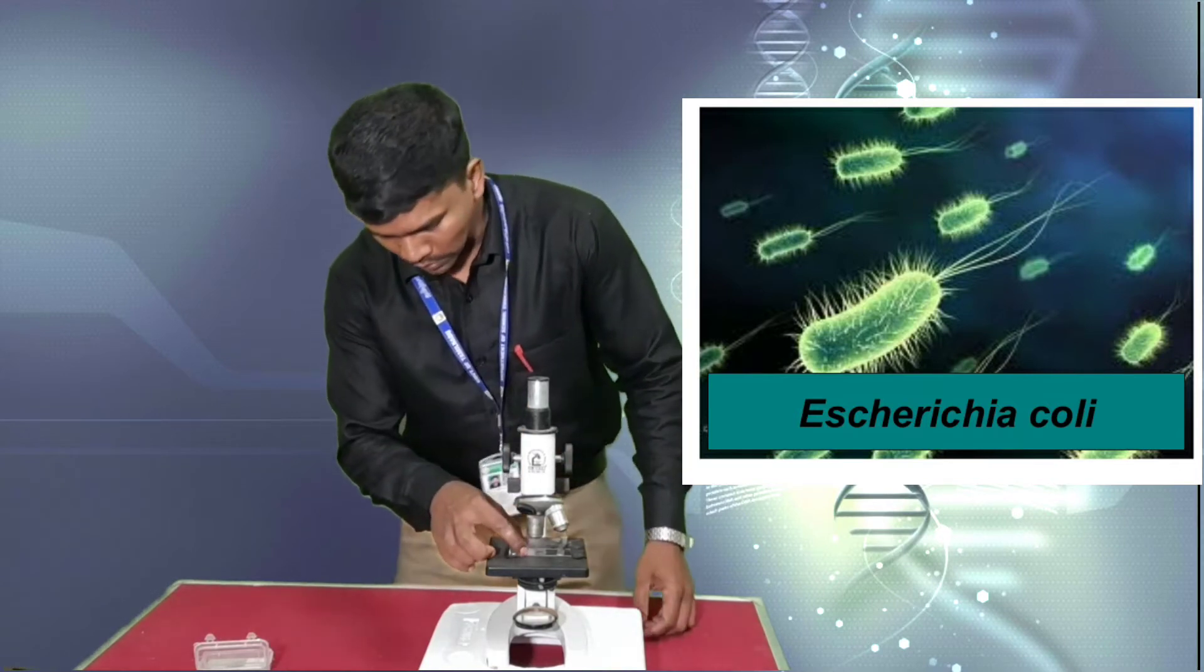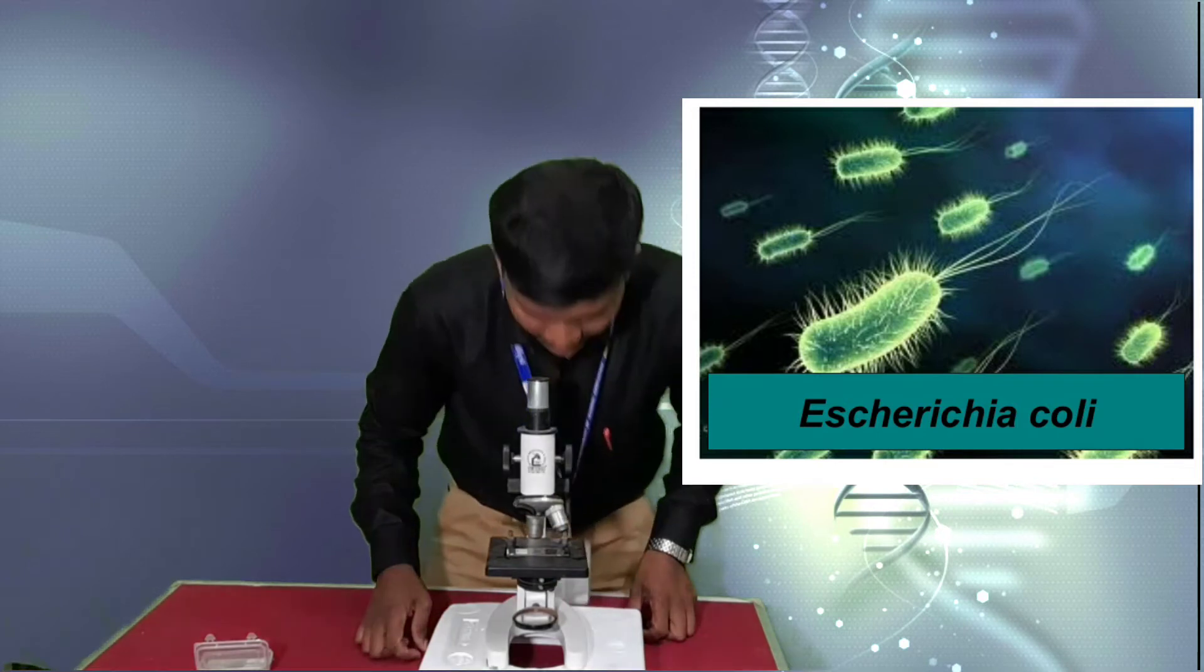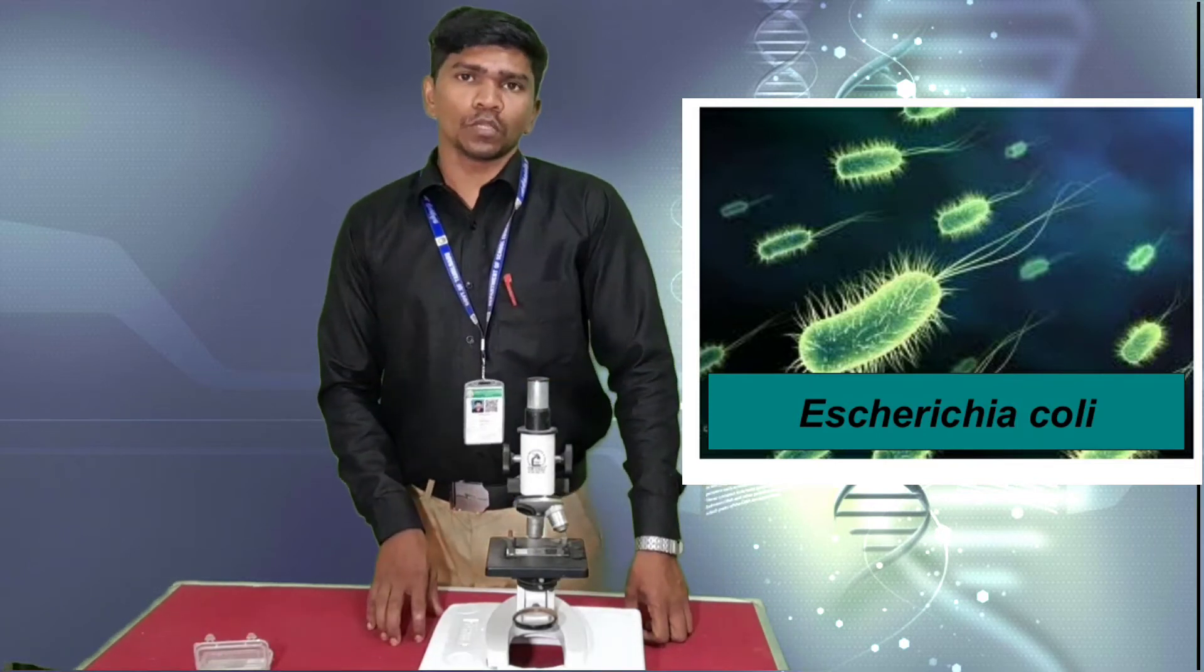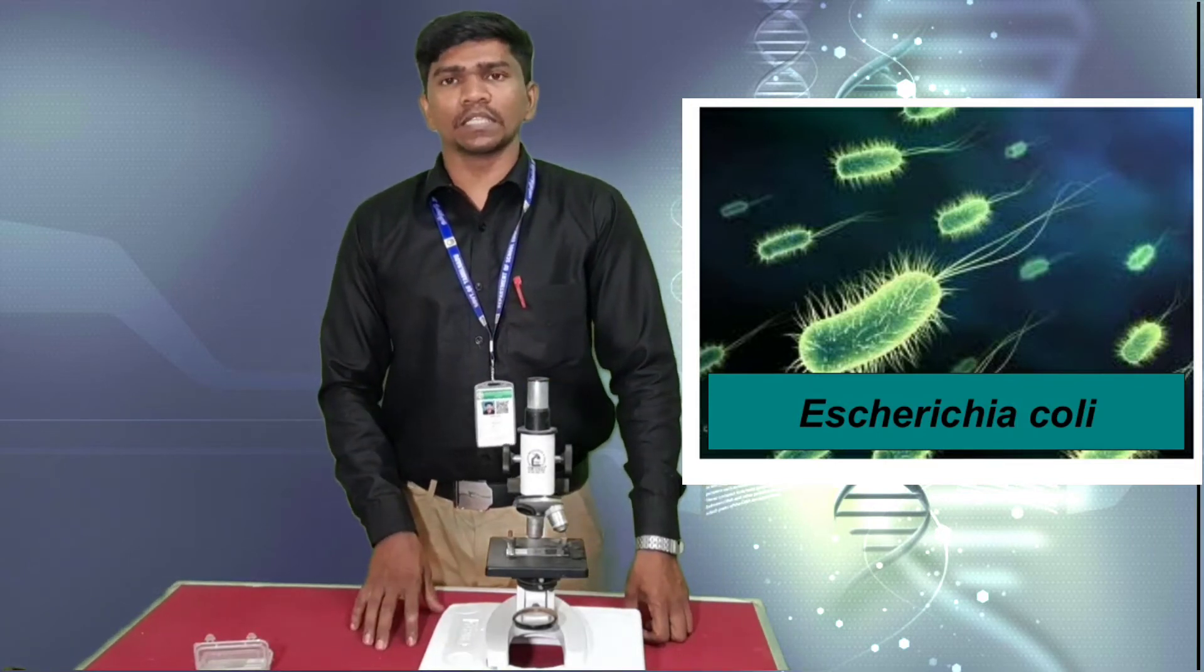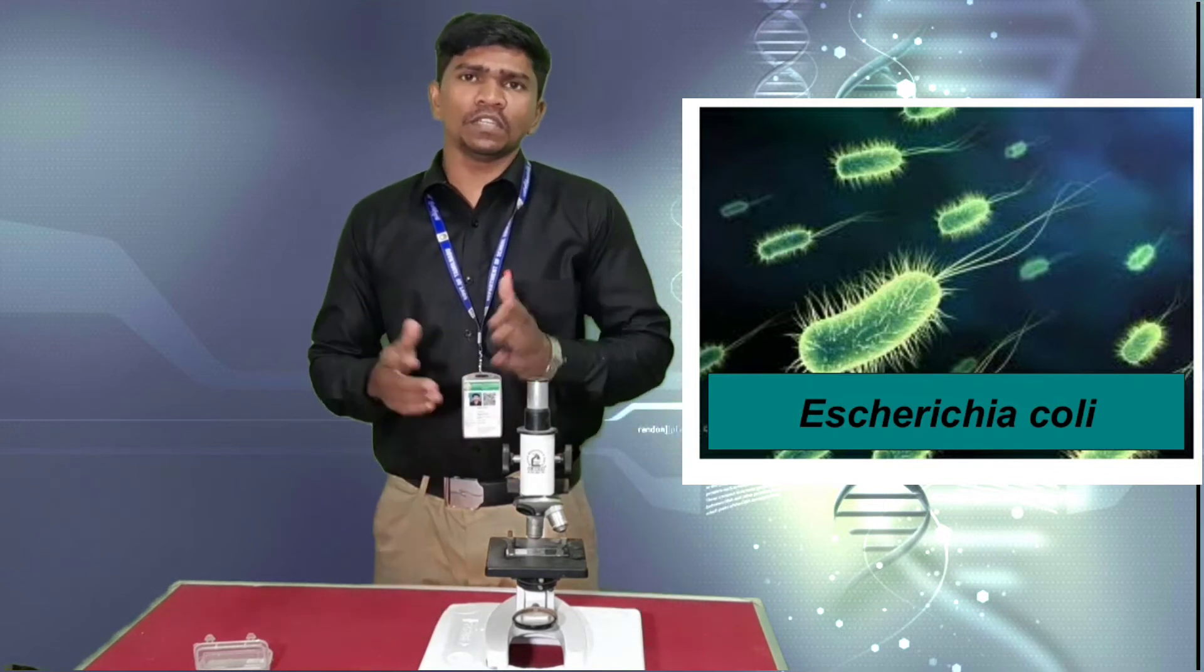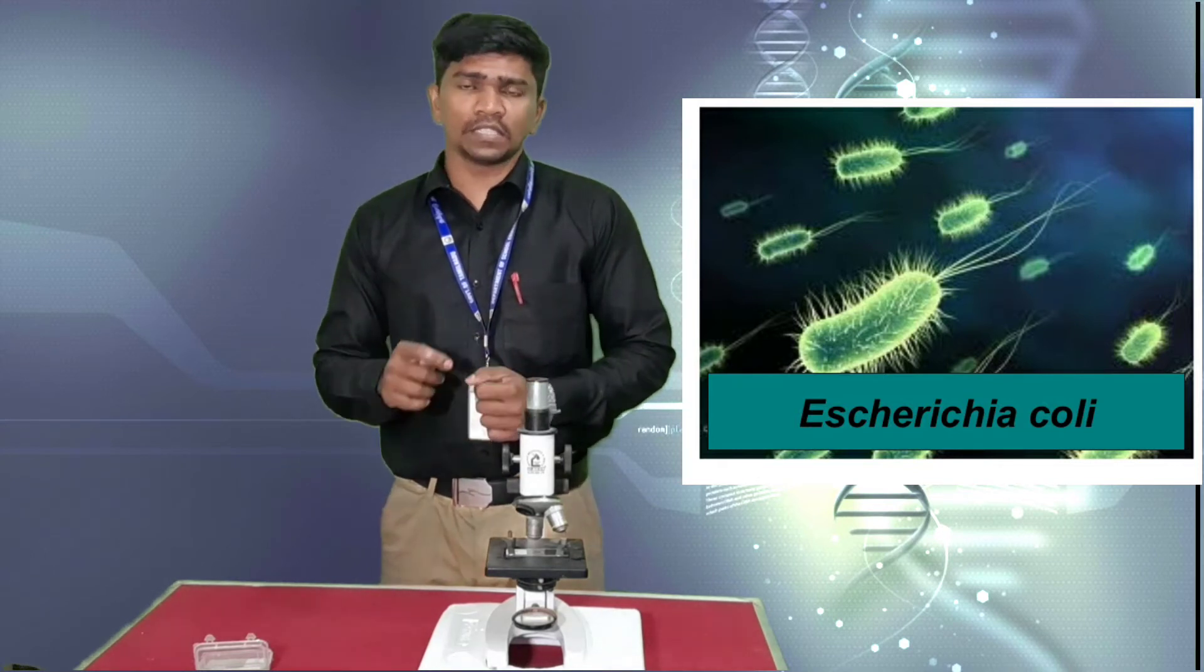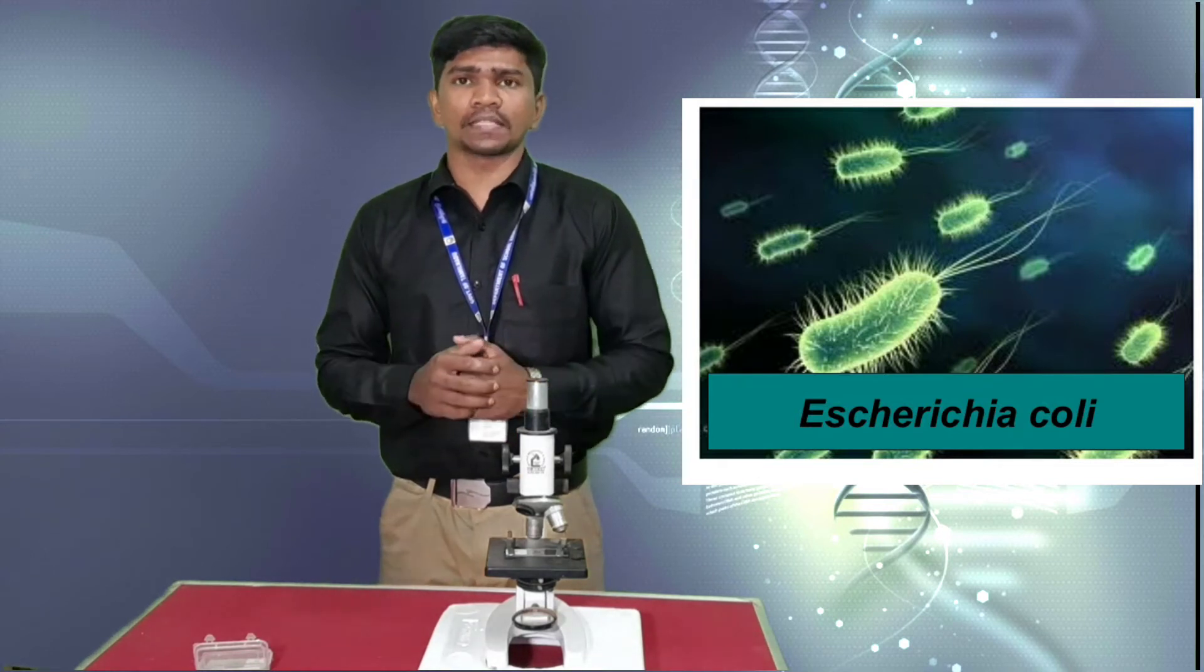First I mounted a slide which is Escherichia coli, commonly called as E. coli, which is present in our intestine. How can we differentiate these 3 bacteria? First you identify - Escherichia coli having flagella with so many plasmids.